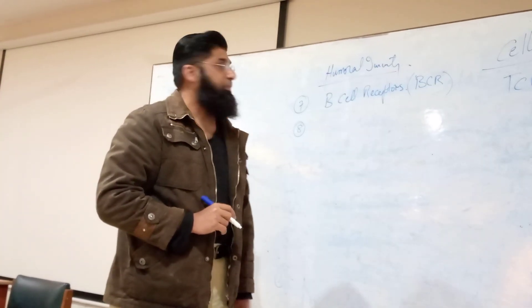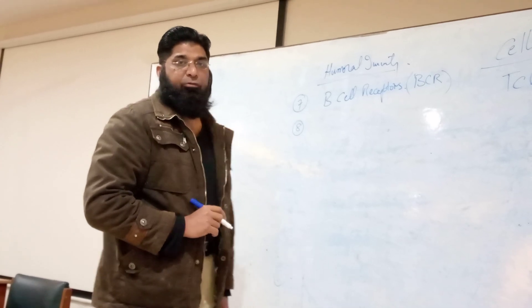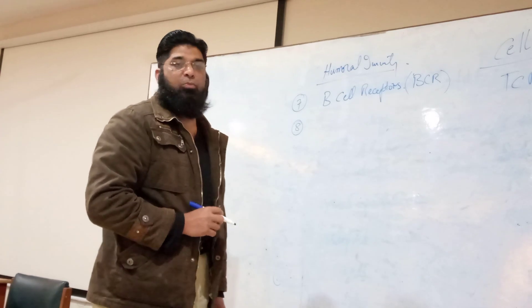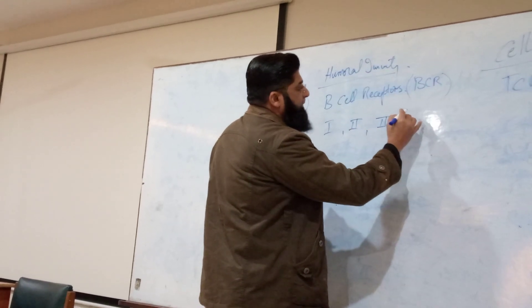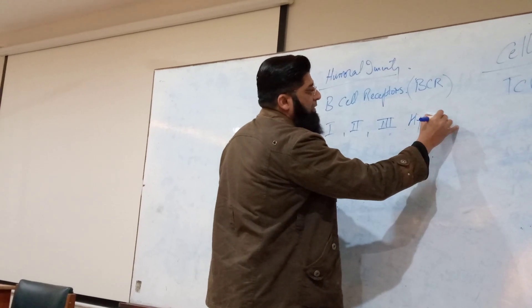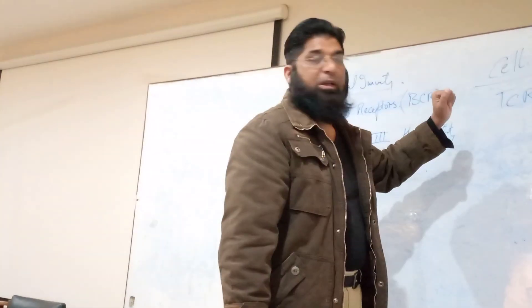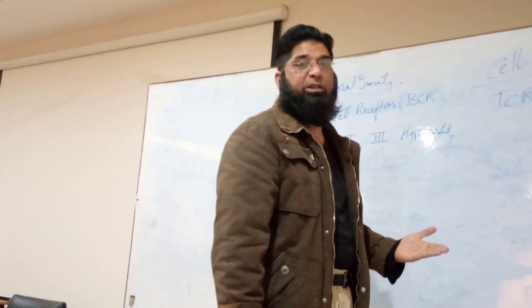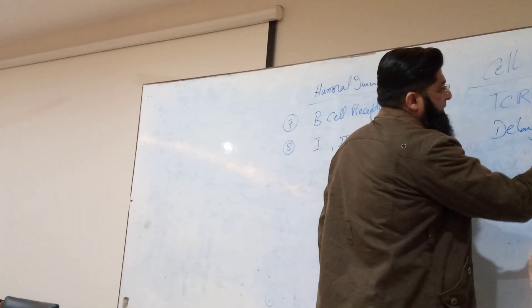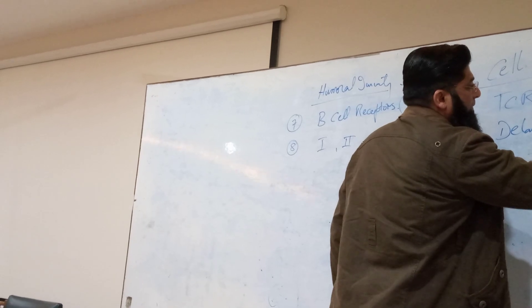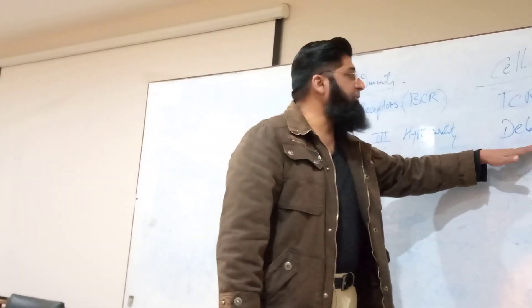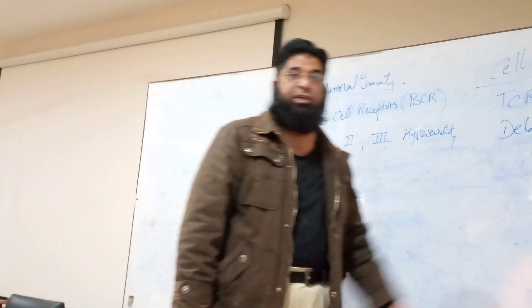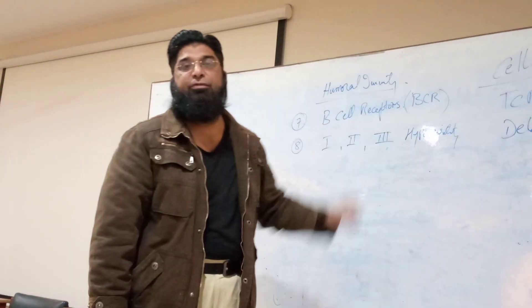How to assess humoral immunity? We can assess the viability of humoral immunity through type one, two, and three hypersensitivity reactions. The effectiveness of cell-mediated immunity can be assessed through delayed hypersensitivity reaction. If the patient timely develops a delayed hypersensitivity response to the antigen, it means that he or she is having effective cell-mediated immunity.